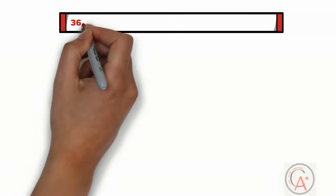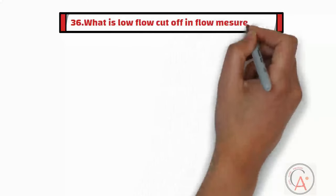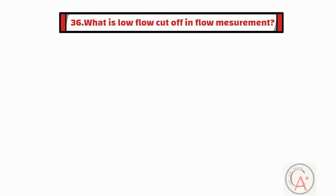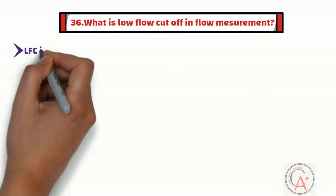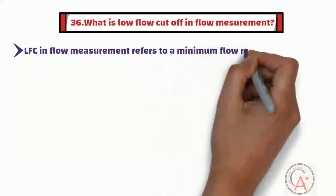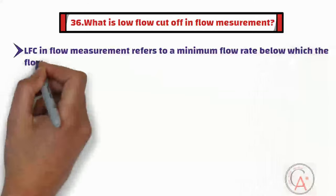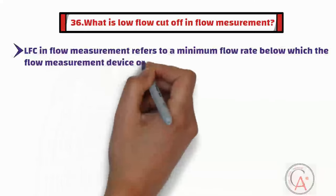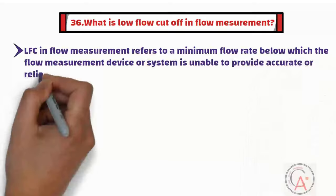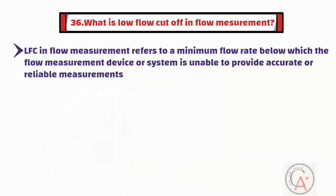The thirty-sixth question is: what is low flow cutoff in flow measurement? Low flow cutoff refers to a minimum flow rate below which the flow measurement device or system is unable to provide accurate or reliable measurements. In many flow measurement devices, there is a practical limit to how low a flow rate they can accurately measure.